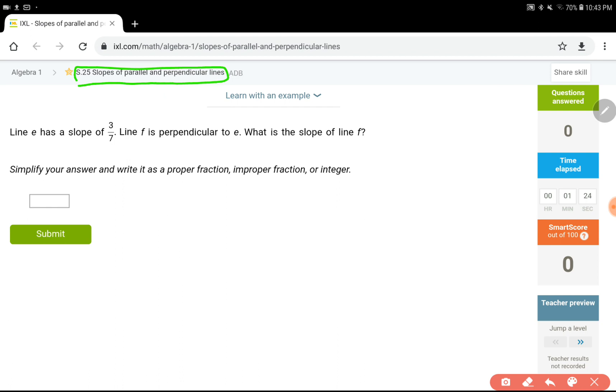So in this question we have a line with a slope of 3 over 7, called line E, and then line F is going to be perpendicular. The question is about the slope of line F. One thing to keep in mind is if the lines are parallel, they have the same slope.